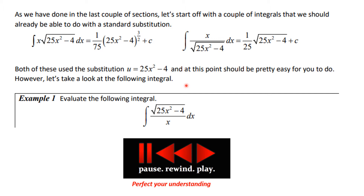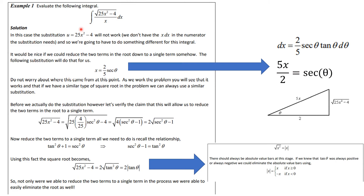Both of these use the substitution u = 25x² - 4 and are pretty easy for you to do, but let's try this next one. Evaluate the indefinite integral of √(25x² - 4) over x dx. My guess is that you crashed and burned, because in this case the substitution u = 25x² - 4 will not work — we don't have the x dx in the numerator that the substitution needs.